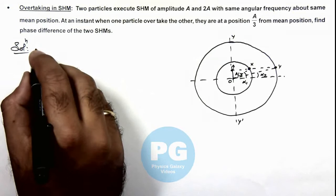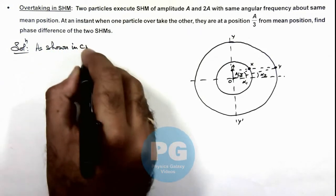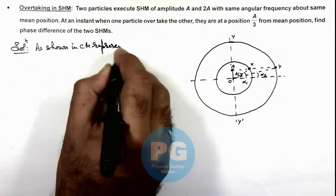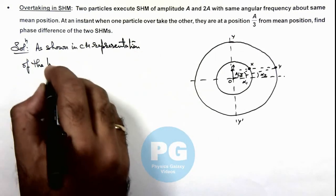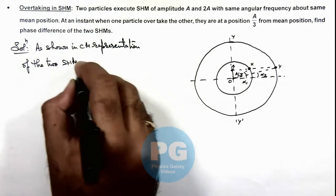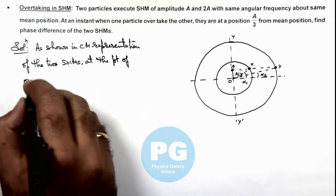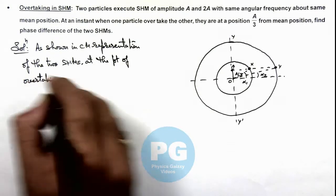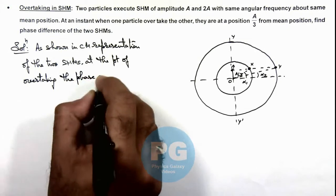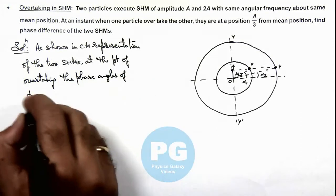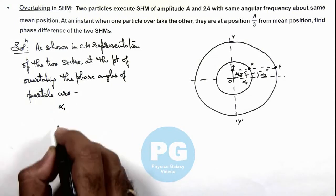We can see as shown in circular motion representation of the two SHMs, at the point of overtaking, the phase angles of particle are these, can be written as alpha 1 and alpha 2.